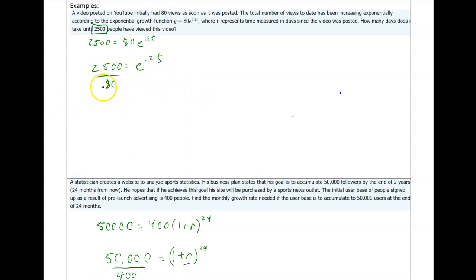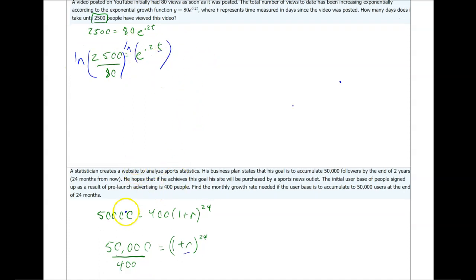I've started just by isolating my exponential expression, and now the way I approach these two equations is going to be different. My first step was the same, but my next step for each of these is going to be different. In my top equation, I'm going to take the log of both sides. In my bottom equation, I'm going to raise both sides to the reciprocal of the exponent.